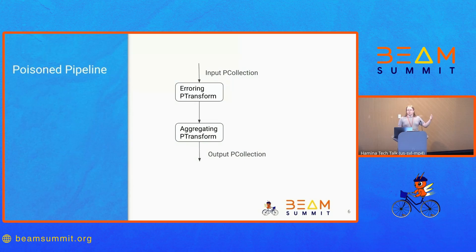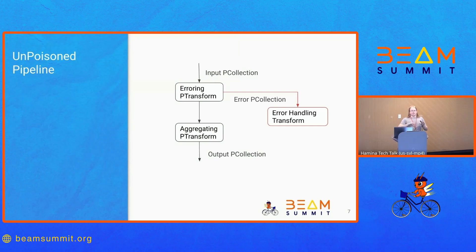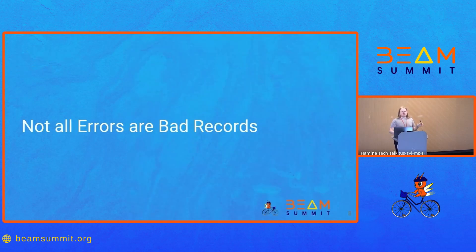If some data element is permanently failing, you want something to happen other than the pipeline getting stuck. The straightforward solution is to take those errors and put them somewhere else. From the Beam model perspective, instead of letting the error propagate to the runner, you put it in some other PCollection and do other processing on it — but from the runner's perspective, processing happened successfully, and processing can continue downstream.